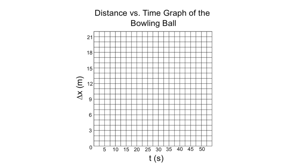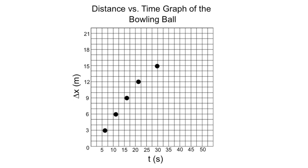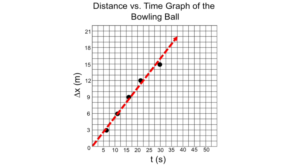A graph has also been provided regarding the distance versus time of the bowling ball. Data points have been recorded as shown. A best fit line has been added to approximate the slope of the line which connects the data points.